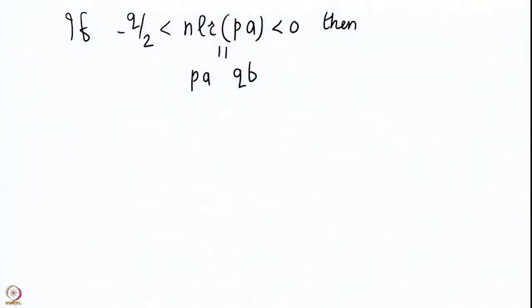What we do here is modify this: we write the numerically least residue as p·a − q·b for some positive b. So we are subtracting a multiple of q from p·a. Since p·a is positive and we want the residue to be less than 0, we keep subtracting multiples of q. The multiple b is unique because the length of the interval (−q/2, 0) is q/2, which is less than q, so there is exactly one numerically least residue in (−q/2, q/2). Thus b is a unique quantity.